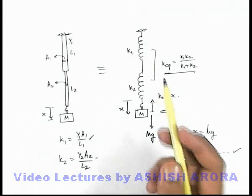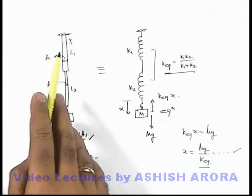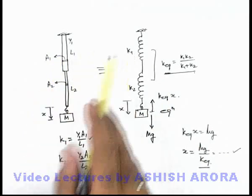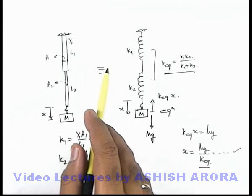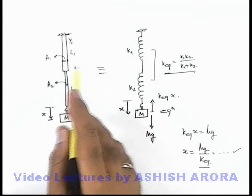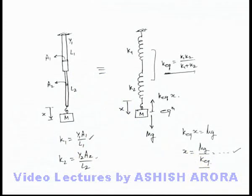You just need to replace each rod or wire by an equivalent spring, and correspondingly solve the situation in the same way.